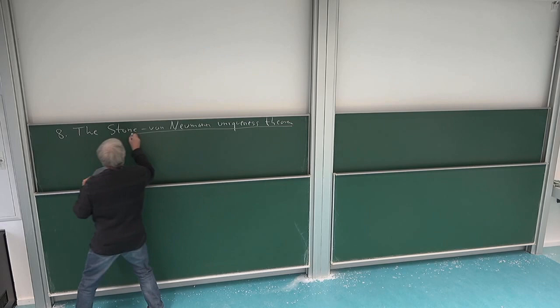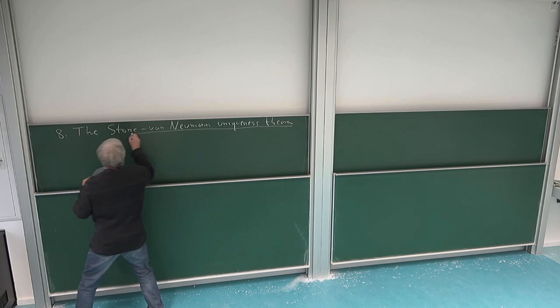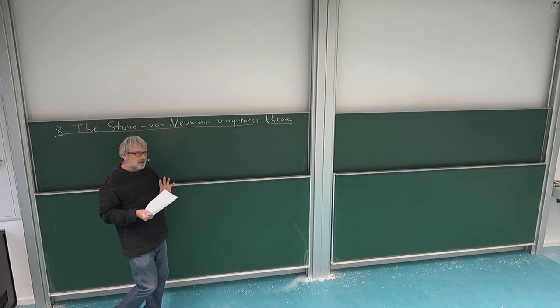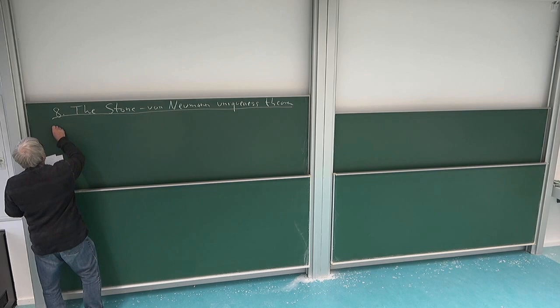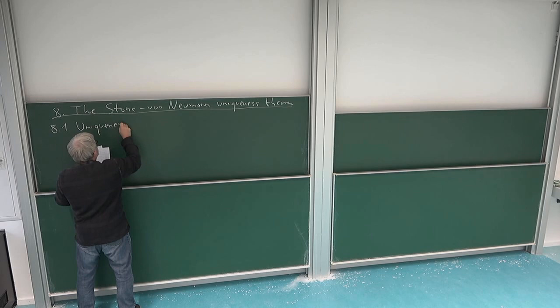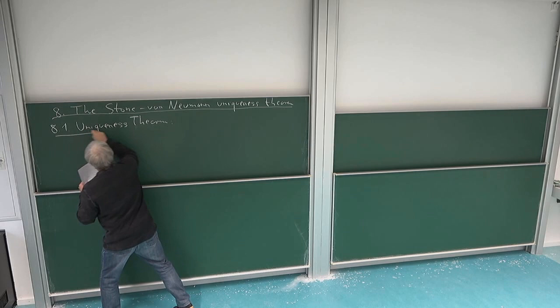This theorem was maybe formulated with first ideas for the proof given by Stone, but it was really proved by von Neumann. So it is often also just called the von Neumann uniqueness theorem. Let me formulate it right away: this is the uniqueness theorem, and the chapter is about proving it.